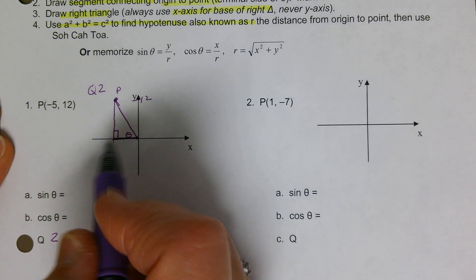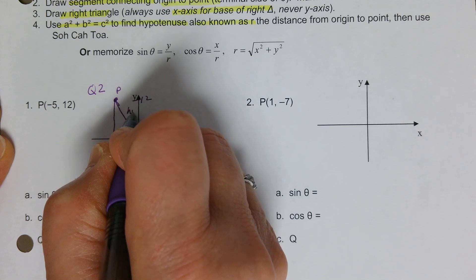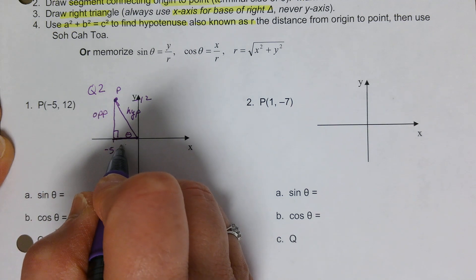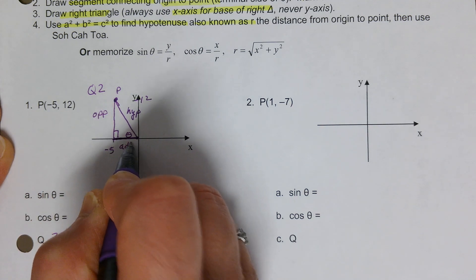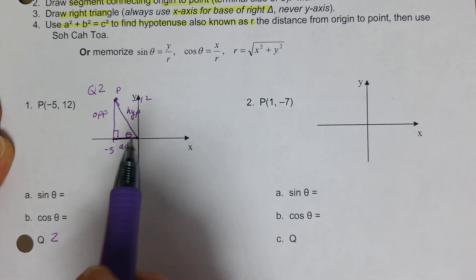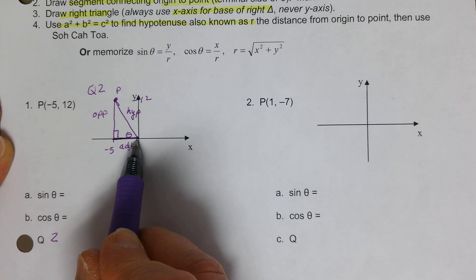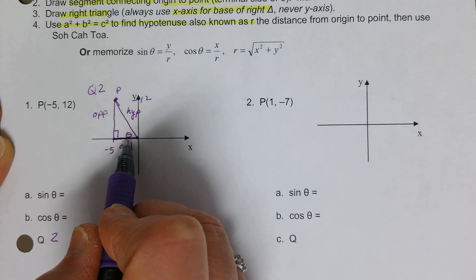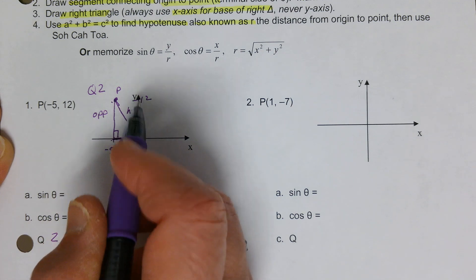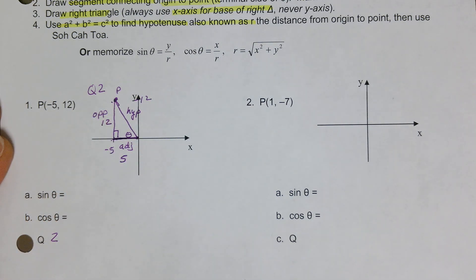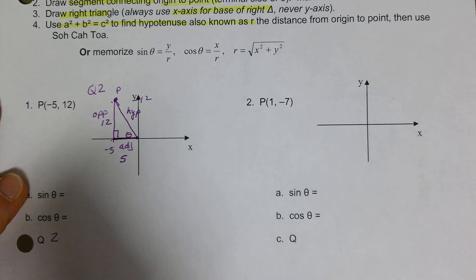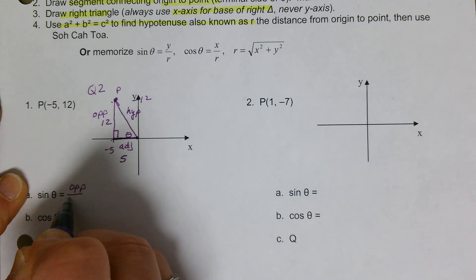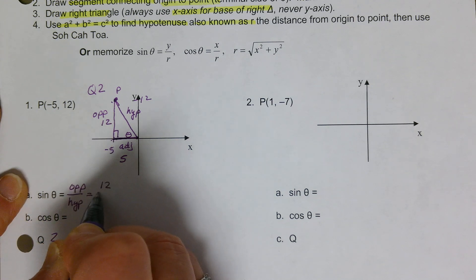In relation to angle theta, the segment from origin to the point is the hypotenuse. The opposite side has length equal to the y-value of 12, and the adjacent side has length equal to the x-coordinate without its sign, which is 5. Sine of theta equals opposite over hypotenuse — 12 over the hypotenuse. We use the Pythagorean theorem: 12² + 5² = 144 + 25 = 169, so c = 13.